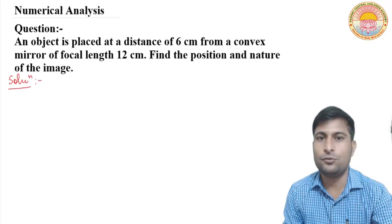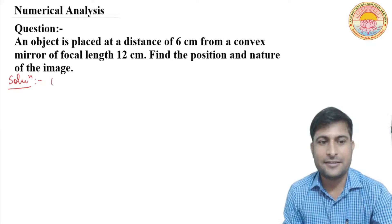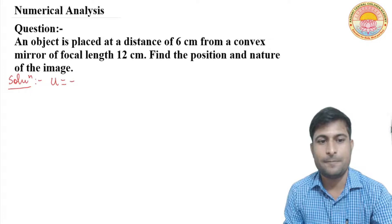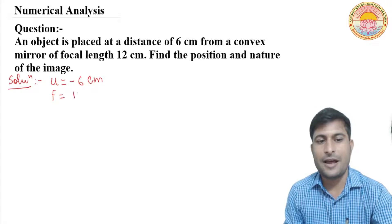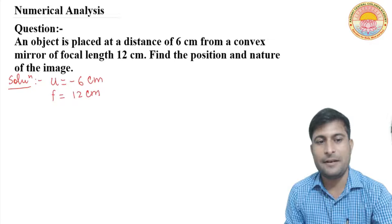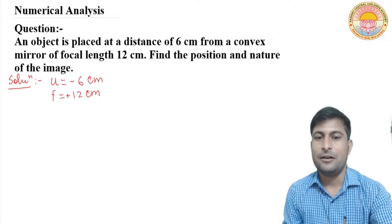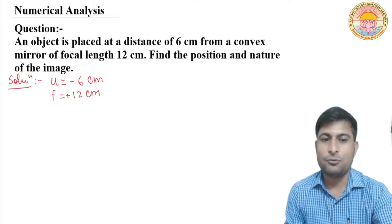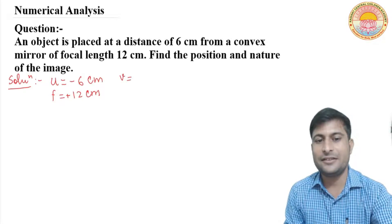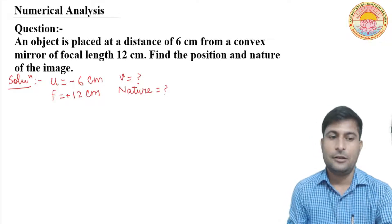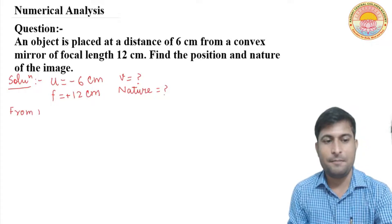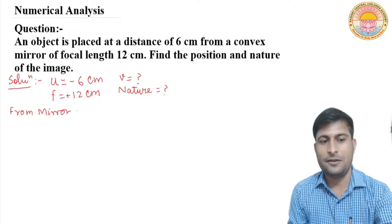First, we note down the given quantities. u is equal to minus 6 centimeters. f is equal to plus 12 centimeters — for a convex mirror, focal length is positive. We have to find: v is equal to question mark, and the nature of the image is also question mark. Now, from the mirror formula: